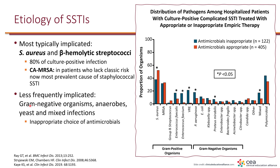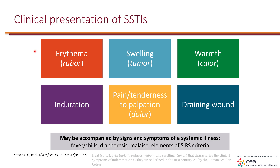Less frequently implicated are gram-negative organisms, anaerobes, and yeast, so in general we are not as concerned about these. With clinical presentation, the hallmarks are erythema, swelling, warmth, induration, pain, or tenderness at the site of infection. For purulent infections, pus will be draining. They may be accompanied by systemic symptoms such as fever and chills, diaphoresis, malaise, or elements of SIRS criteria. We will use these to label infections as mild, moderate, or severe, which will be discussed when going over treatment.